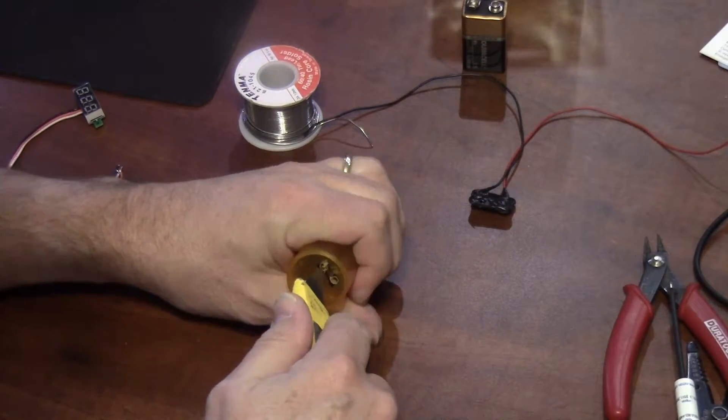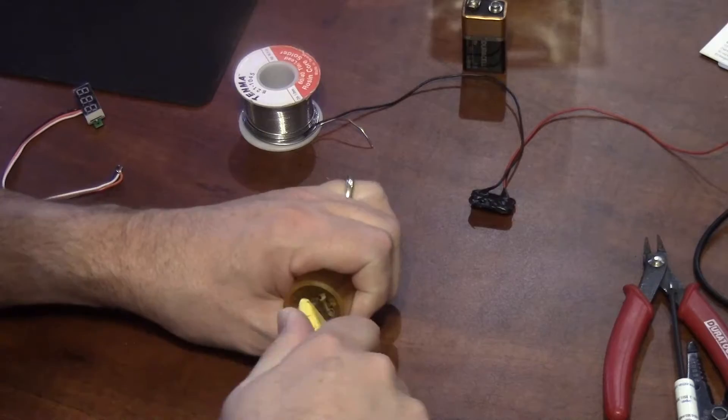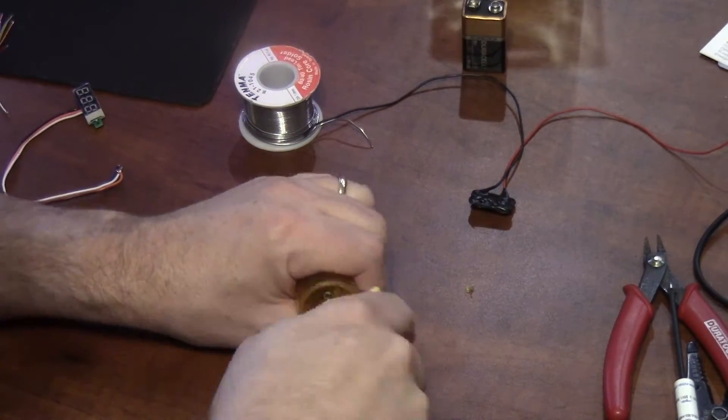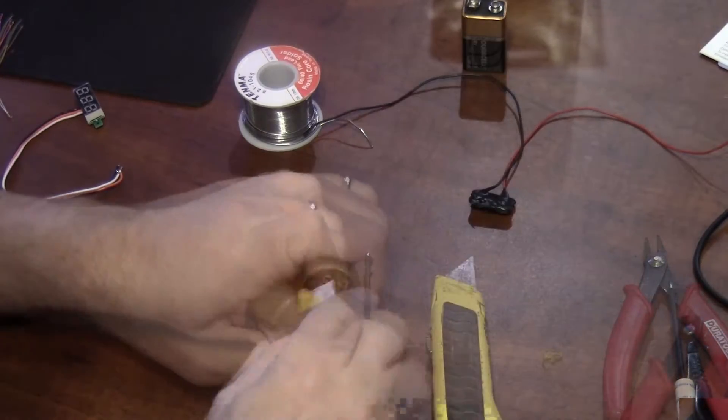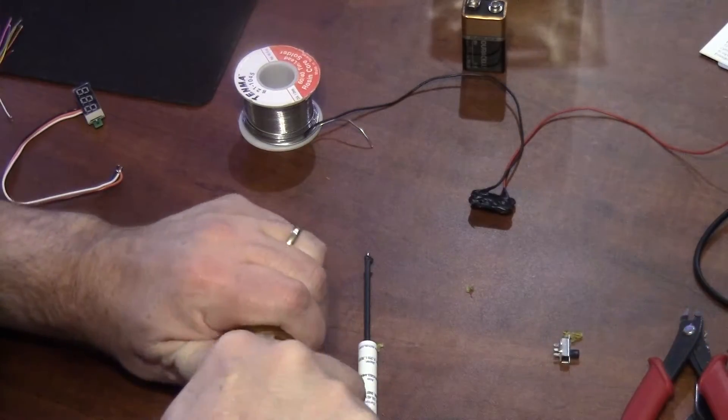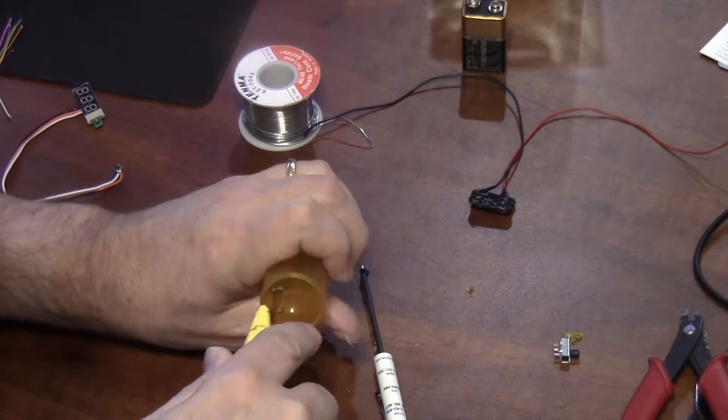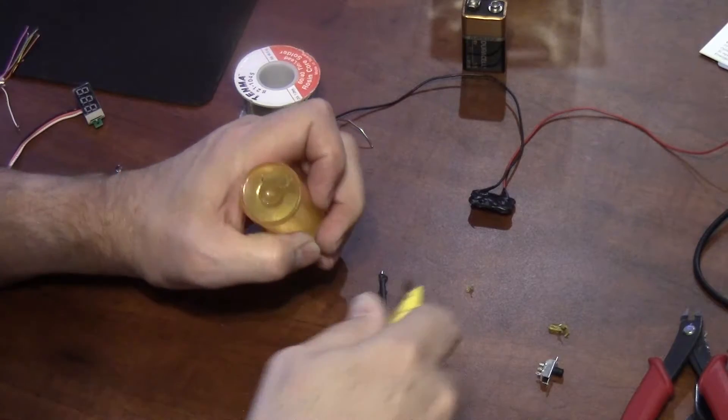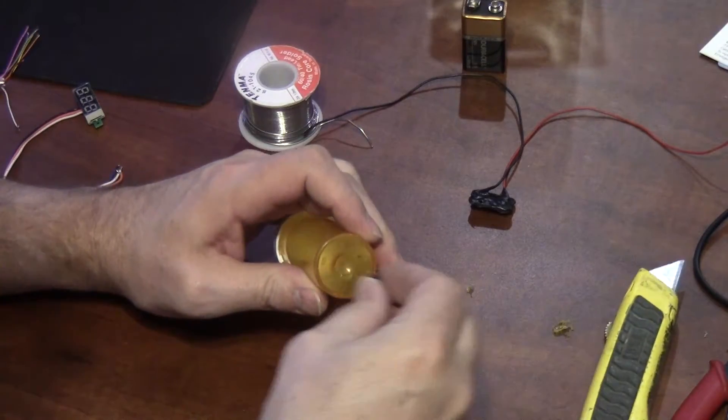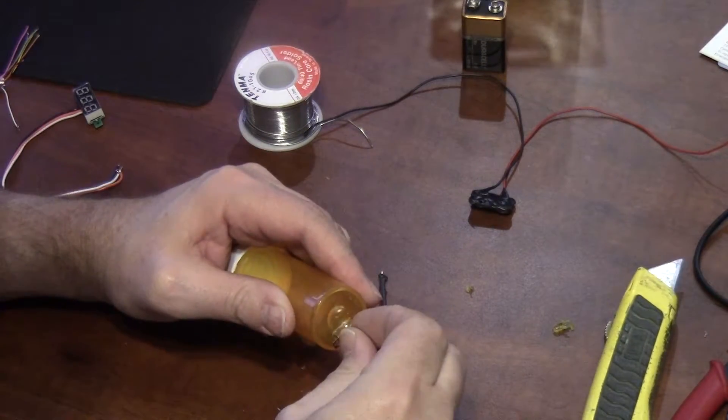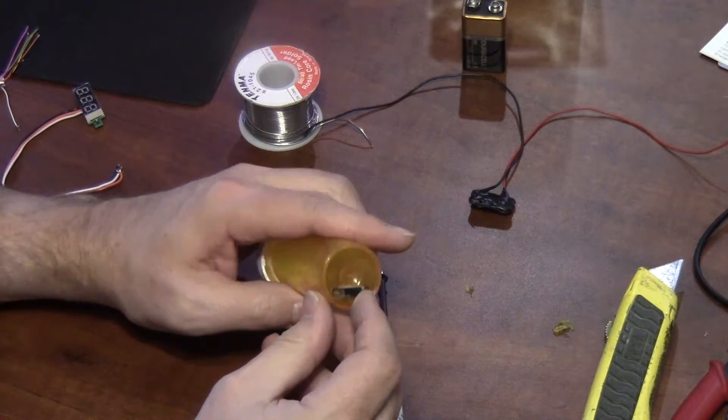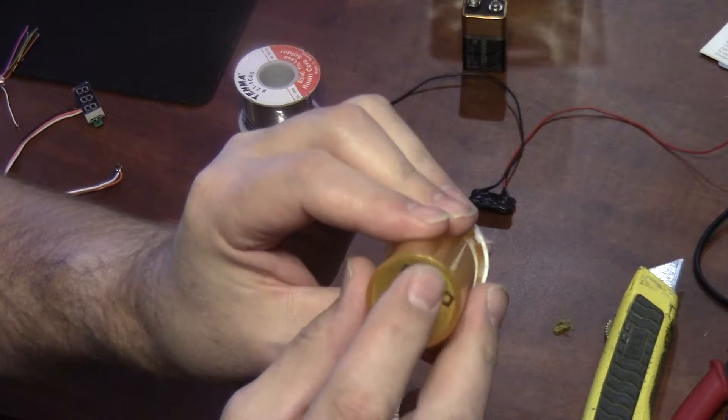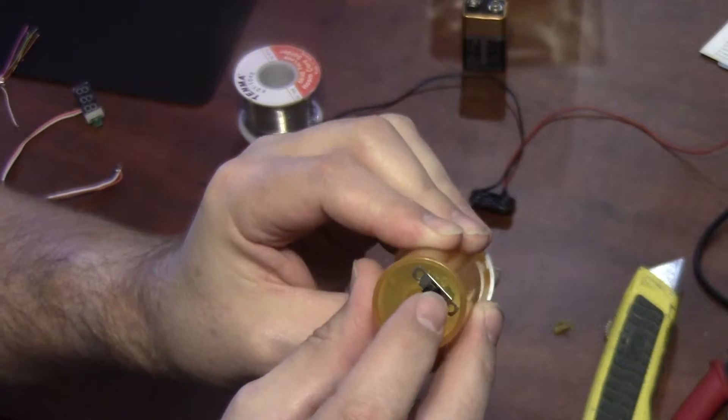Then I just take an Exacto or a razor knife and I just cut between the two holes and then just kind of carve it out until the switch fits in there nicely. I was going to hot glue it in there, but as it was, I think I just made it kind of fit kind of tight and just left it.